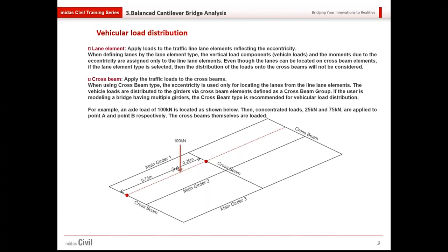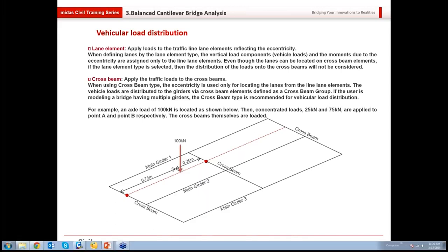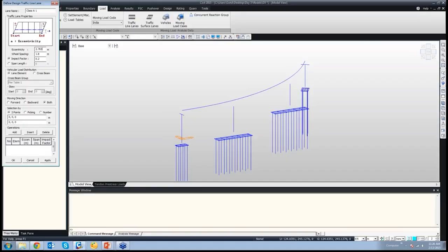However, if the cross beam distribution option is selected, then the 100 kN load would be distributed to the cross beams, and from the cross beams that load will go to the main girders or the nodes supporting that cross beam. This is how distribution happens for a grillage model. Whenever a grillage model is used, you have to select the cross beam distribution option. In our case, using the picking method, you select the individual element numbers. Using Select by Window, we select all the elements — elements 1 to 55 are entered. The eccentricity, wheel spacing, impact factor, vehicle direction, and elements are all defined, then click Add.